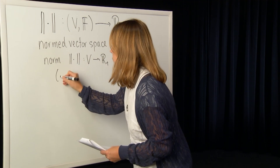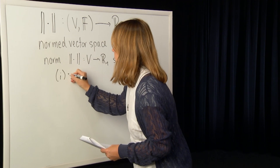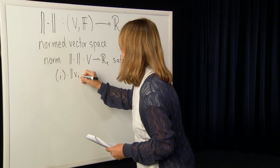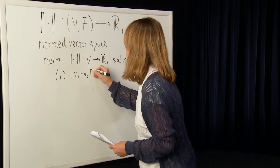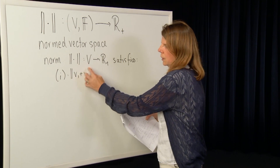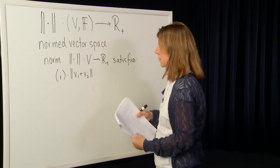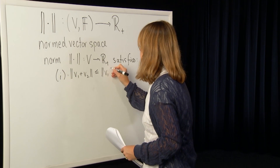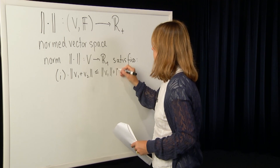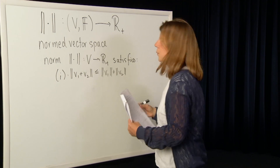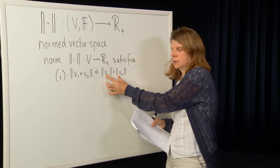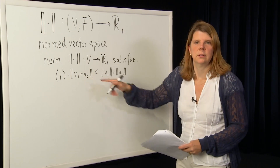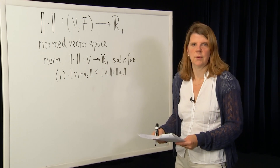The first is called the triangle inequality. That is, if you look at the vector sum of two vectors V1 and V2 in V and you take the norm, then that's going to be less than or equal to the sum in R-plus of the norms of the individual vectors themselves. And that's true for all V1 and V2 in the vector space V.